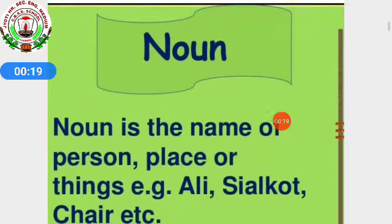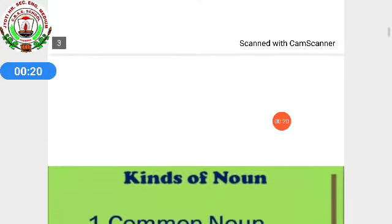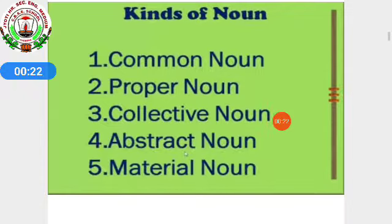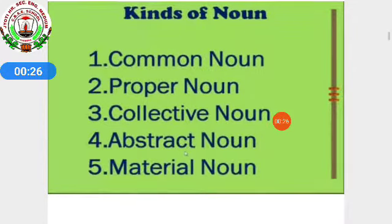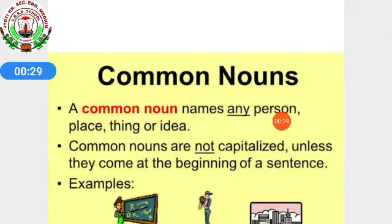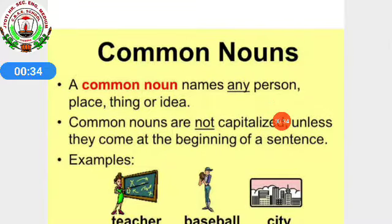Then we learnt about the kinds of nouns — how many kinds of nouns are there: common, proper, collective, abstract, and material. Then we learnt about common nouns, that it is a common name for any person, place, thing, or idea, and it does not start with capitalization.